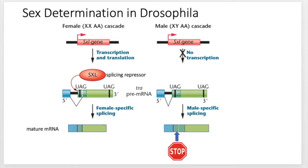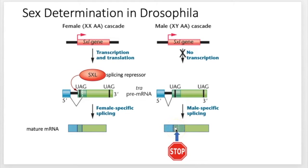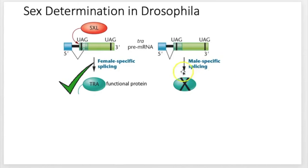Why does that matter? In the first part of that chunk that was cut out in females but retained in males, there's a signal that tells the cell to stop reading the mRNA right there. So when the cell makes a protein in males, it only reads the first blue part and just a tiny green chunk — then stops. Whereas in females, because that stop signal was cut out, the cell reads the full sequence and makes a complete, functional protein.